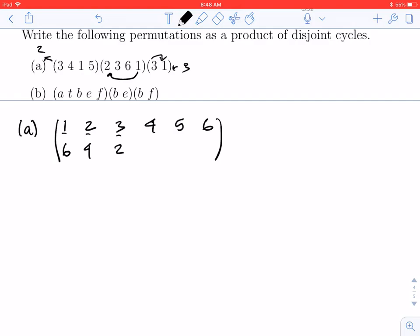Now we'll check 4. 4 is missing from the (3,1) cycle. It's also missing from (2,3,6,1). But it does show up in the third cycle (3,4,1,5), and 4 goes to 1. Now I'll check 5. 5, just like 4, is missing from the rightmost and the second cycle, but it does show up in the last one where 5 goes to 3.